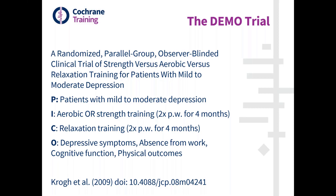Some of the outcomes of the trial were depressive symptoms, absence from work, cognitive function, and a range of physical outcomes. We've given the reference details for the trial so you can find the paper if you're interested, but we are going to show relevant excerpts from the trial. Normally in ROB 2, we would be choosing a specific result to assess, but for this domain, because it's likely to be exactly the same for all results or all outcome domains, we're not going to specify a particular result — we're just going to look at the randomisation process for the trial.